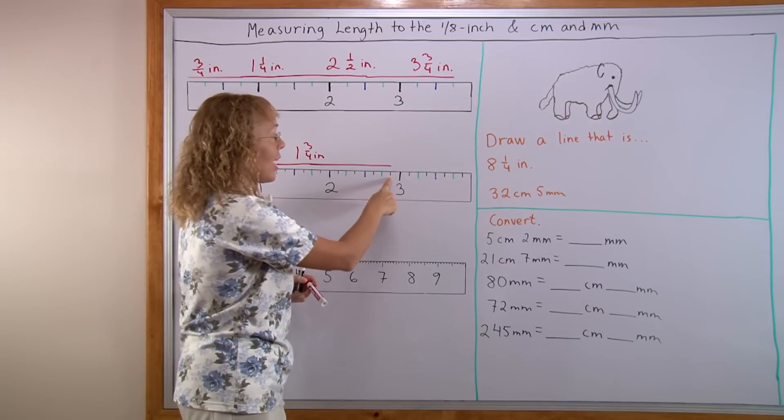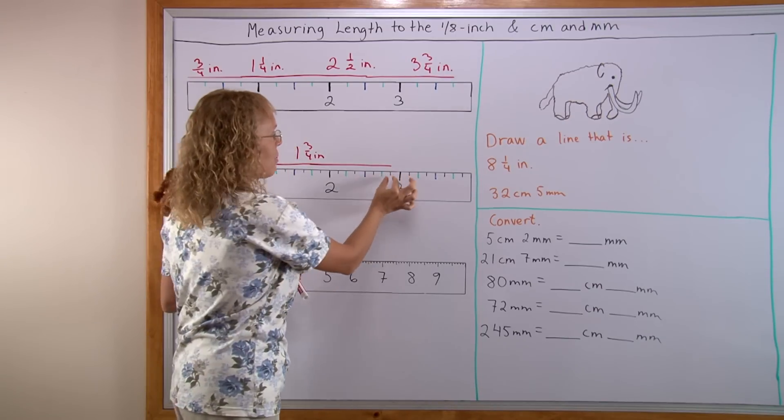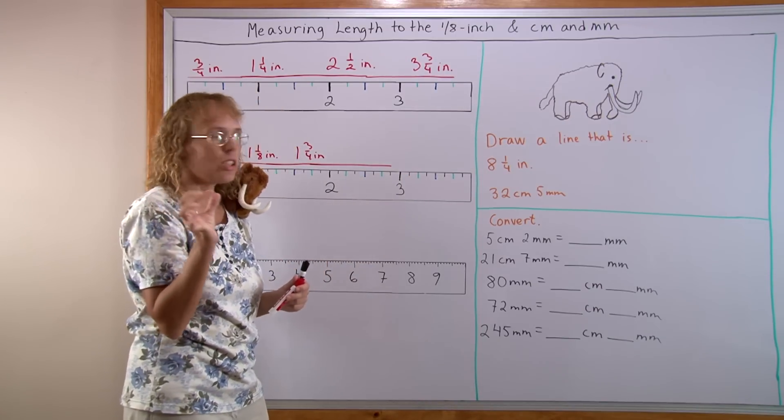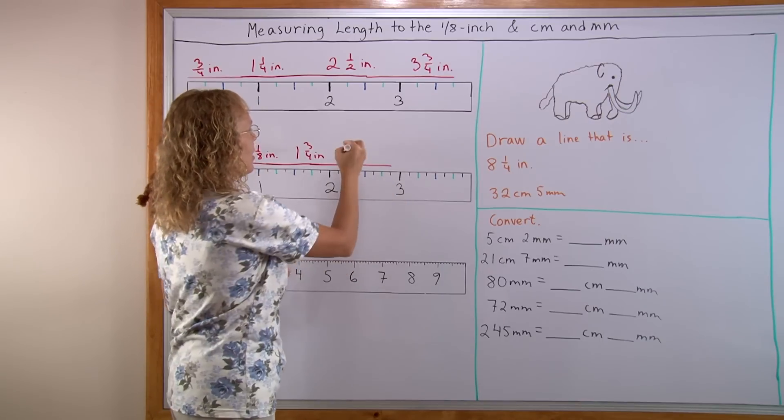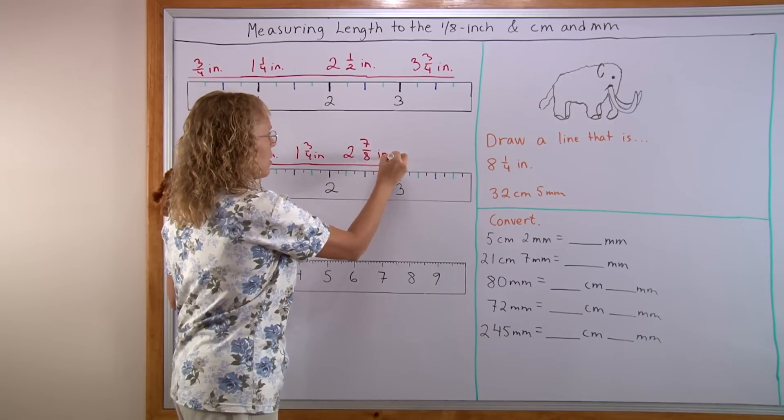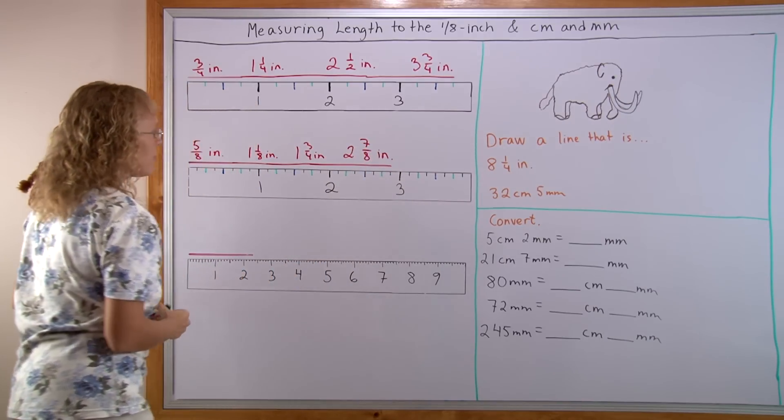Or you can notice that it is the last tick mark before the 3 inches and these tick marks were for the 1/8 inches. So it must be 7/8. 2 and 7/8 inches.